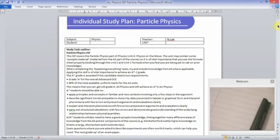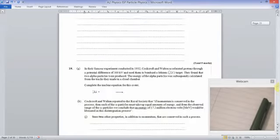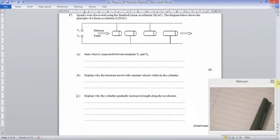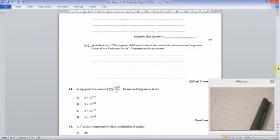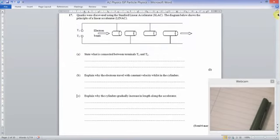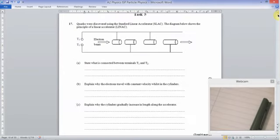Let's have a look at the questions. The first question is based on a linear accelerator. It talks about the discovery of quarks at the Stanford linear accelerator and has a picture with drift tubes connected together with terminals. What is connected between terminals T1 and T2?